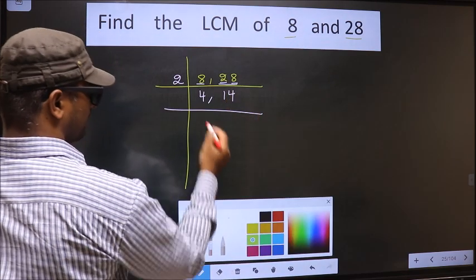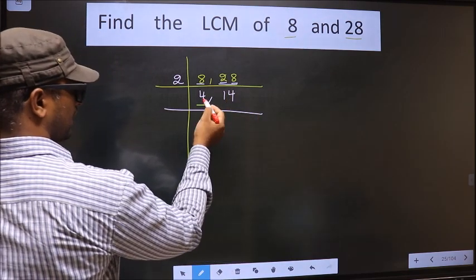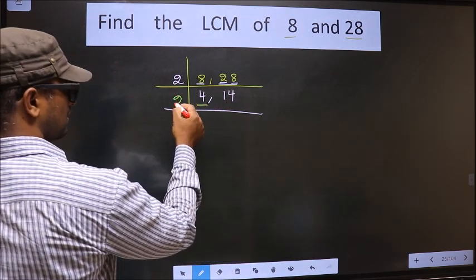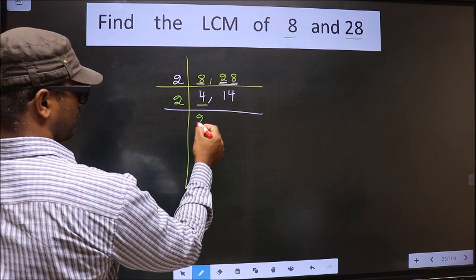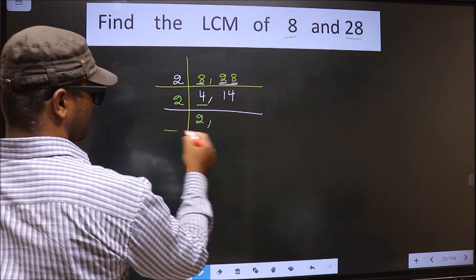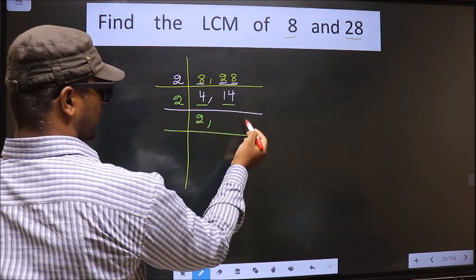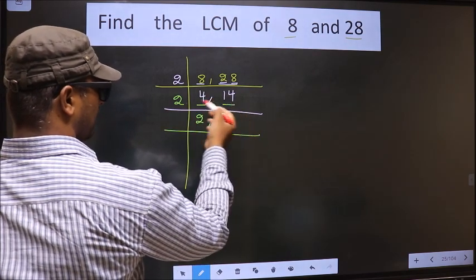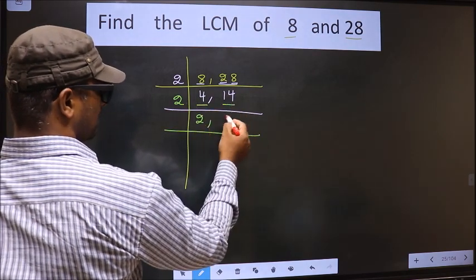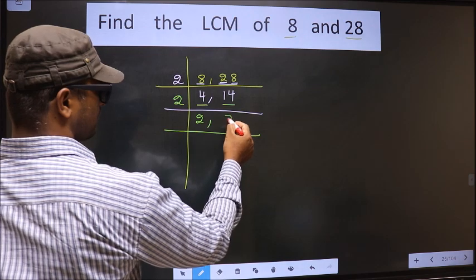Now we have 4 here. 4 is 2 twos are 4. The other number is 14: when do we get 14 in the 2 table? 2 sevens are 14.